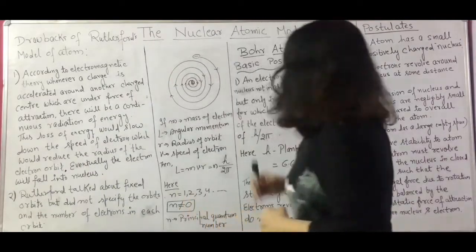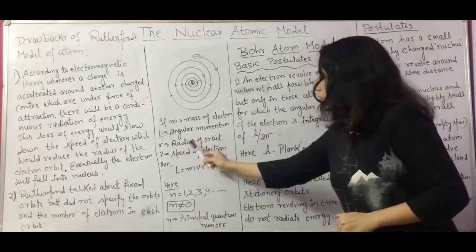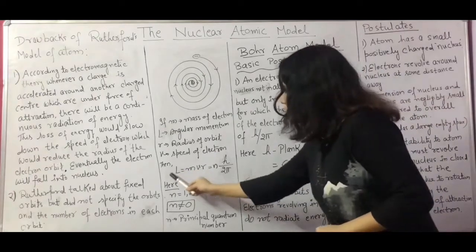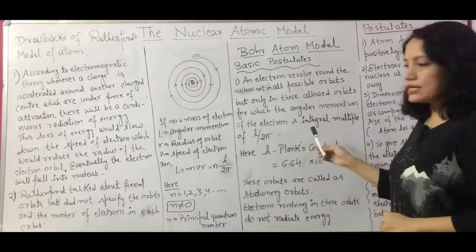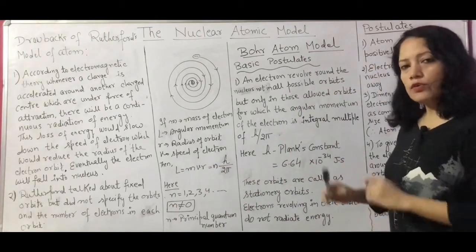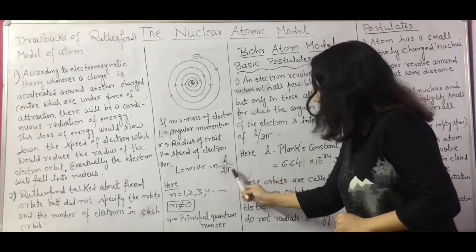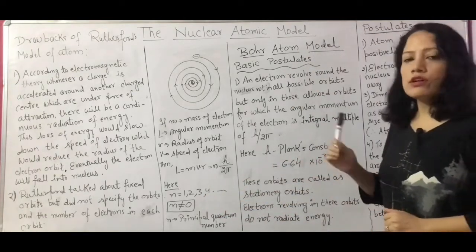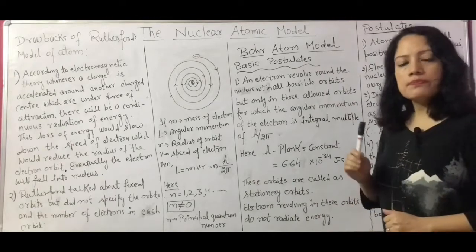If m represents mass of the electron, L is angular momentum, r is the radius of the orbit, and v is the speed of the electron, then the angular momentum L equals m·v·r, which according to Bohr's postulate must equal n·h/2π — only those are the allowed orbits. Here n is an integer which can take values 1, 2, 3, 4 and so on, but it cannot be equal to zero; it always starts with 1. Here n is called the principal quantum number.